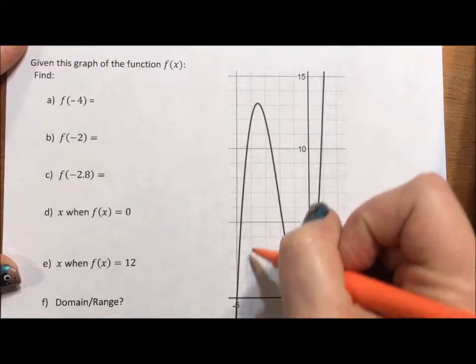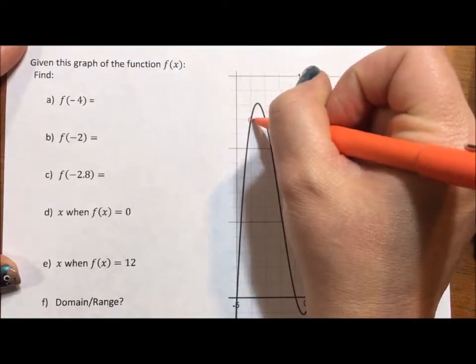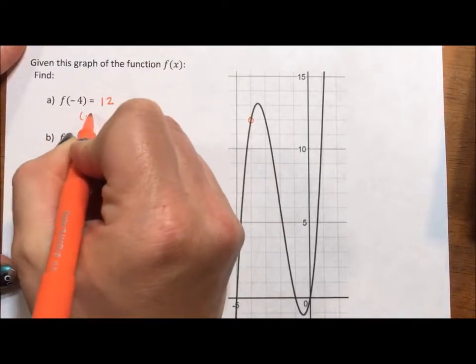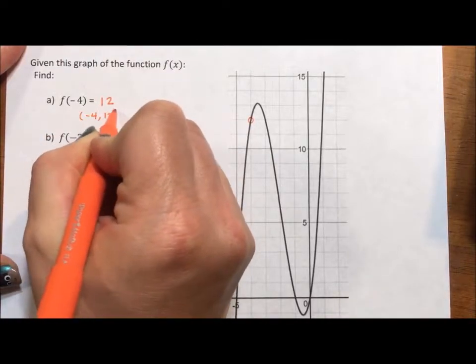So we come over to x is negative 4. We come up and we see we cross right here at 10, 11, 12. So 12. In other words, negative 4, 12 is a point on this graph.